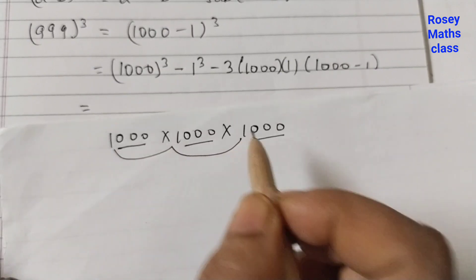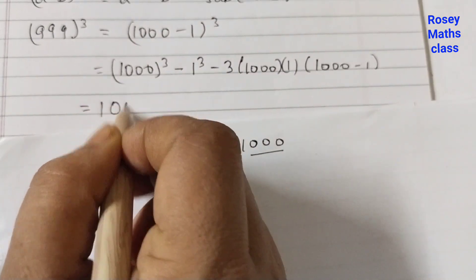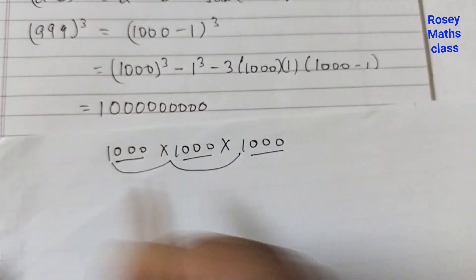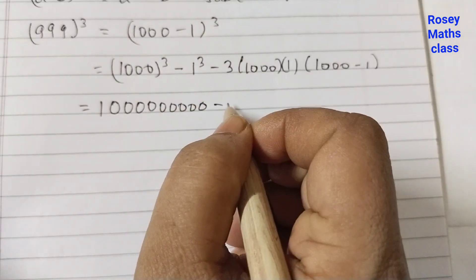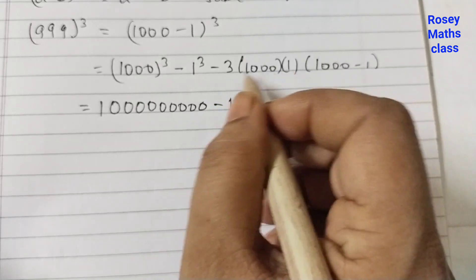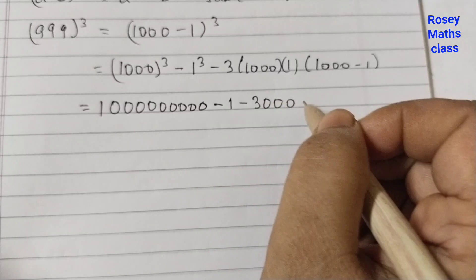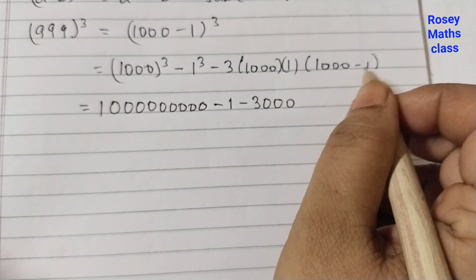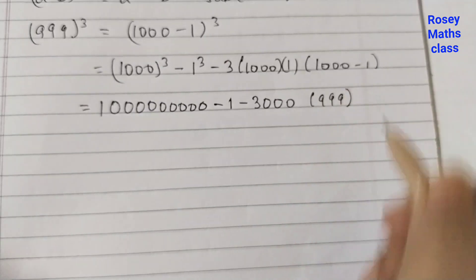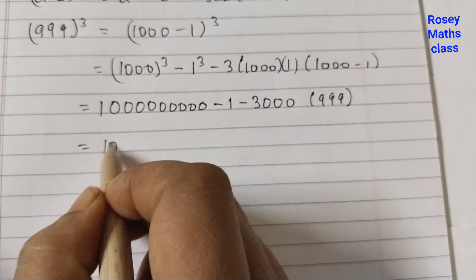So 1000³ equals 1,000,000,000. Minus 1 cubed, which is 1 × 1 × 1 = 1. Minus 3 into 1000 into 1 — three terms multiplied — that gives 3000. And (a minus b) is 1000 minus 1, which is 999.